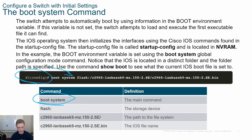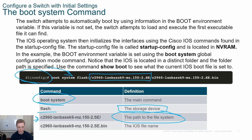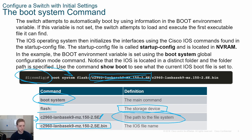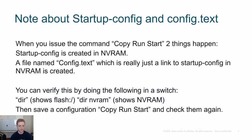You put it in configuration mode. 'boot system' is the main command. 'Flash' is the storage device, which is pretty much always flash. We may have a folder — if we do, we'll need to specify it — and then with a forward slash and the actual file name. In production I usually see there aren't any folders; there's really no reason unless you have a ton of files in your flash, which you shouldn't.